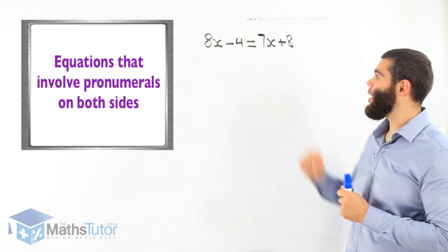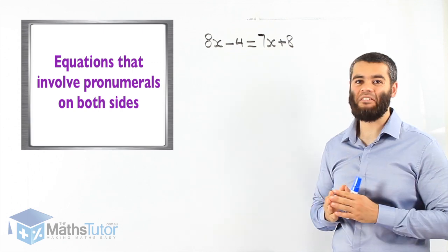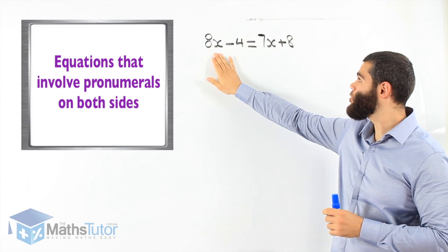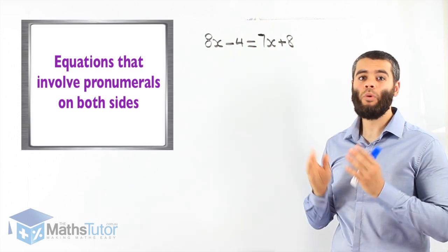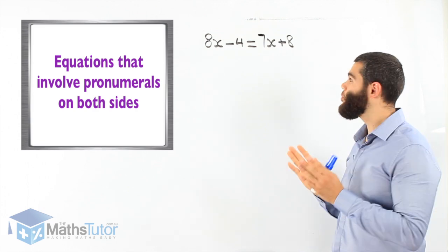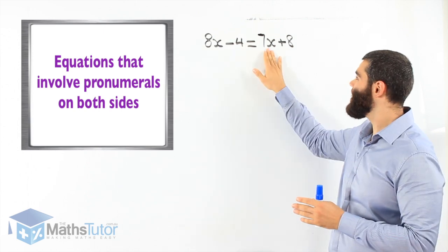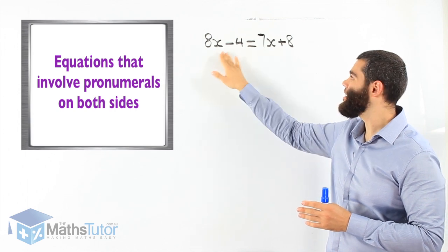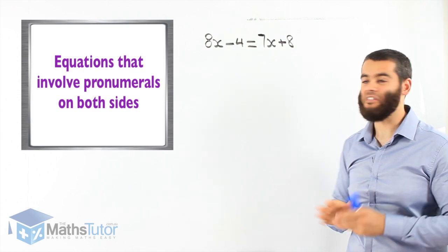We have an equation where we have 8x minus 4 equals 7x plus 8. What do you notice? We have pronumerals on the left and pronumerals on the right. We would like to move all pronumerals to one side, preferably to the left. So we're going to move the 7x to the other side. Let's do that first.